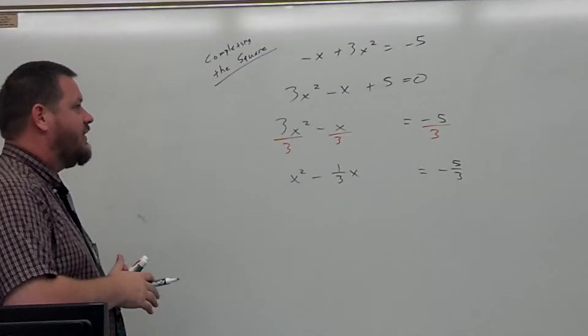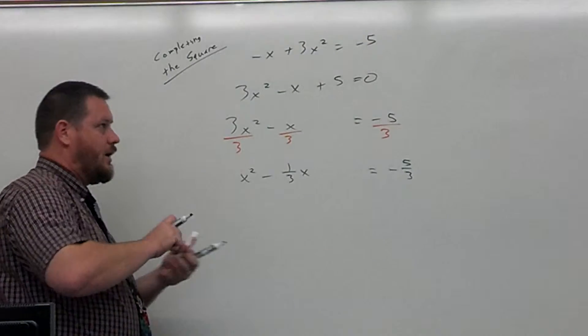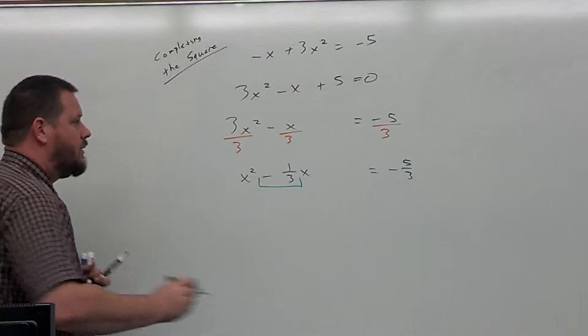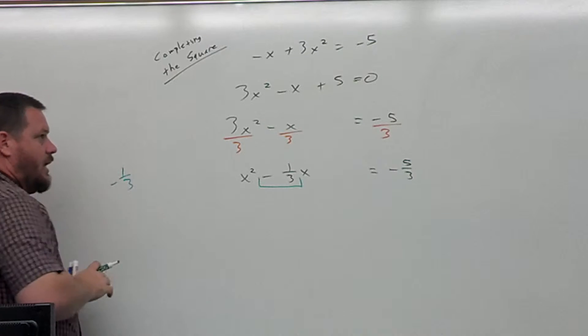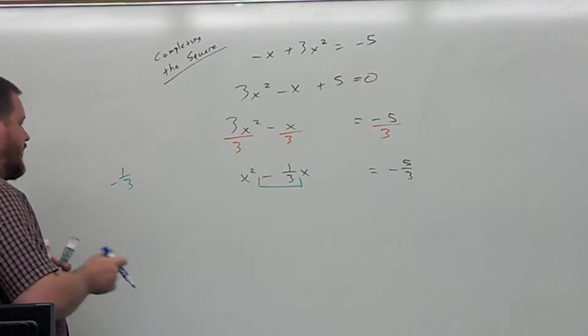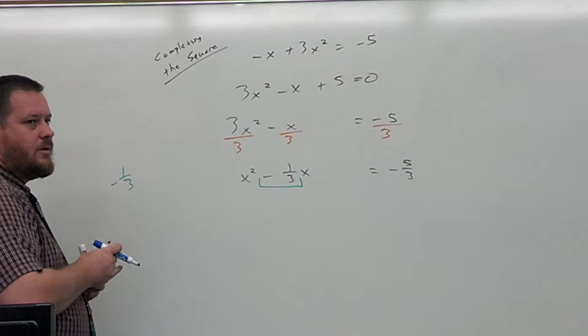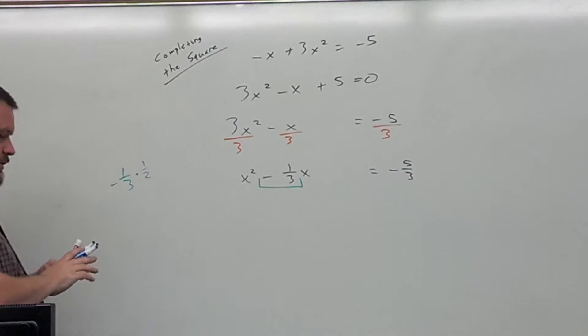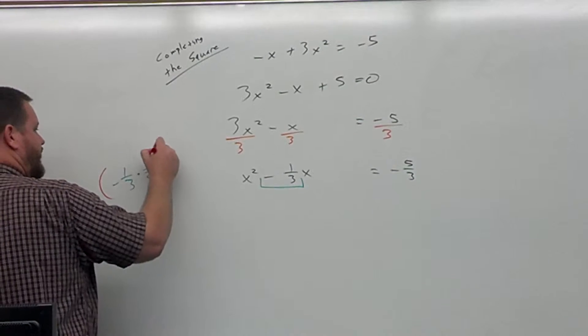Now the next thing we need to do is we need to take the coefficient of the x term, and I like to include the sign. So this right here, negative 1 third, and I like to write it off to the side. I take that negative 1 third, and we need to either divide it by 2 or multiply it by 1 half, whatever works better for you. So I'm going to multiply by 1 half,